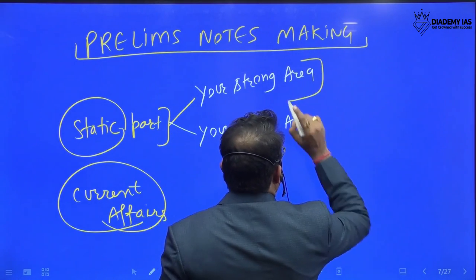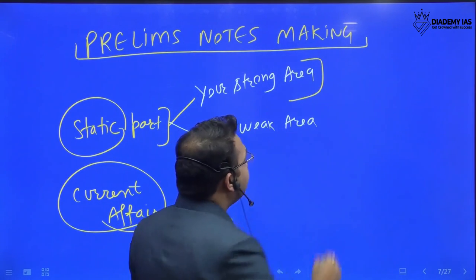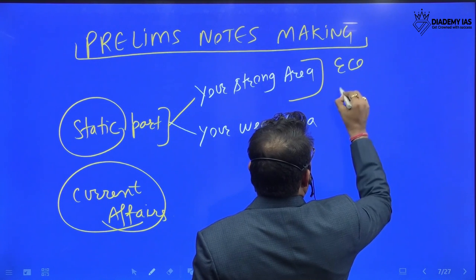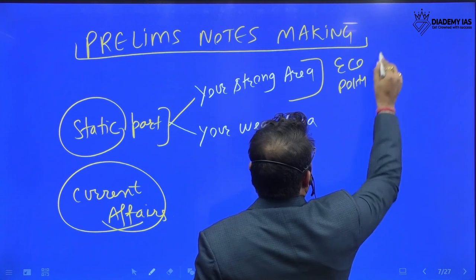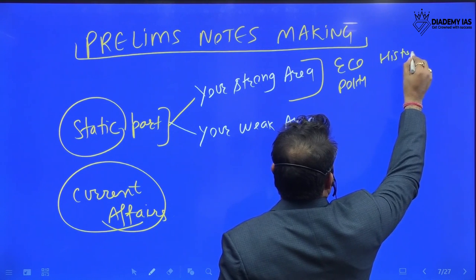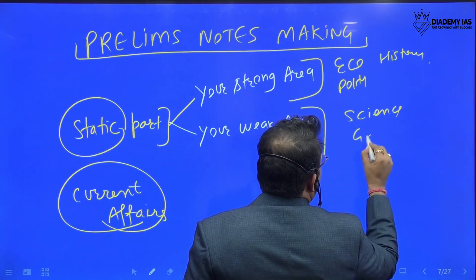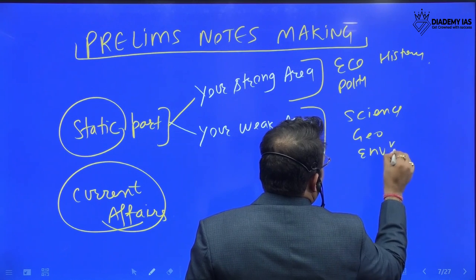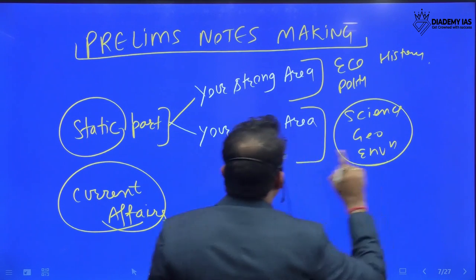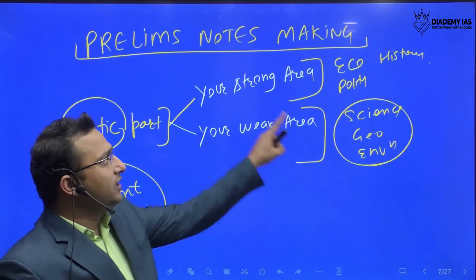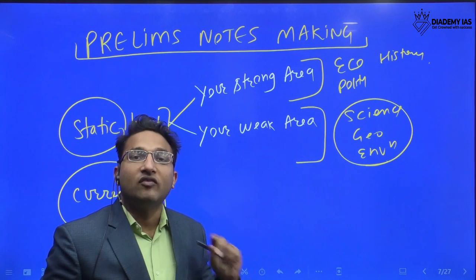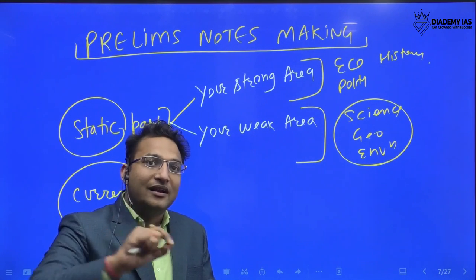One, which is your strong area. So if you are from the commerce background, then mostly economy, polity and history are comparatively easier for you. But mostly I have seen science, geography, environment are the weak areas. So what I will say in the strong area, do not make any notes. Whatever source you are following, keep underlining that source.